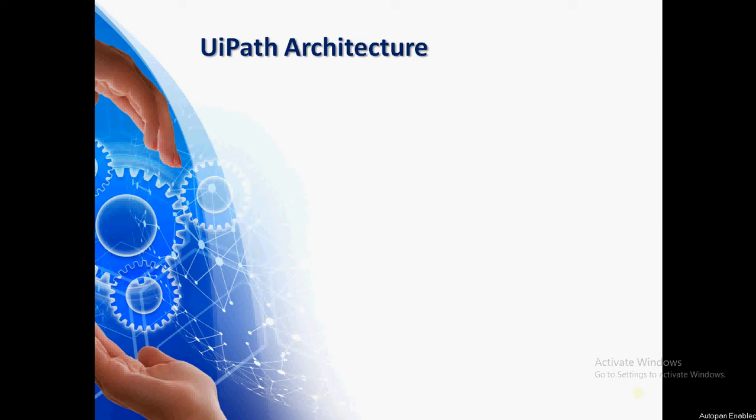As of now, we have seen the components of UiPath: UiPath Studio, UiPath robots, the types of robots, and then UiPath Orchestrator. So now we will see how these things are interlinked and how they are arranged. Let us consider a scenario in which you are getting a new client for RPA with UiPath, and you have taken one license for Studio, one license for robot, and one for orchestration.